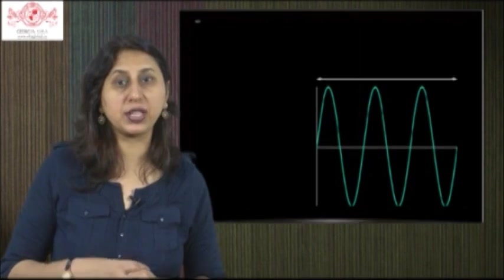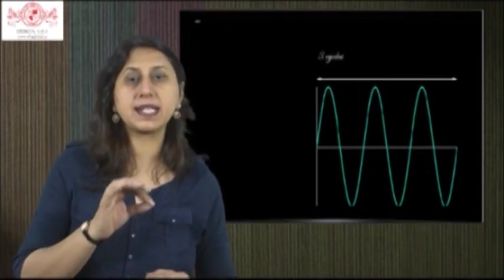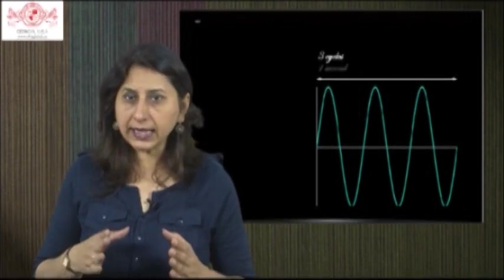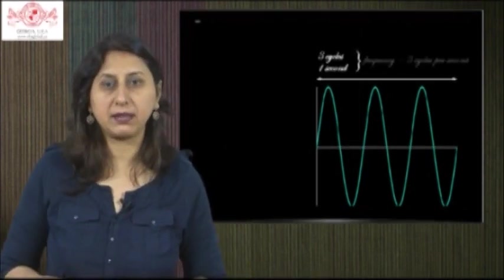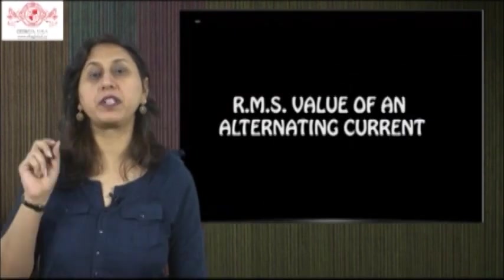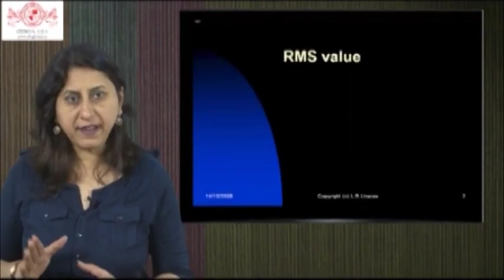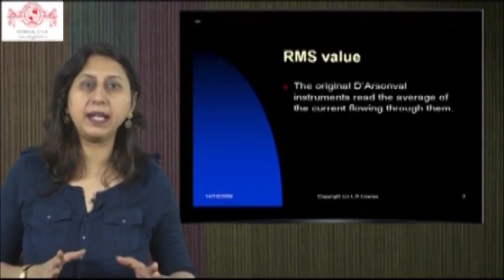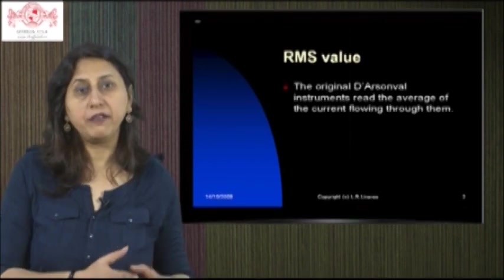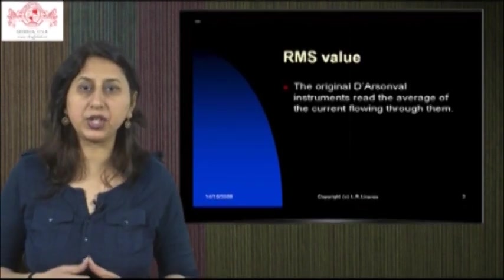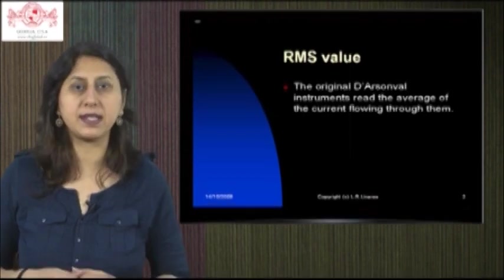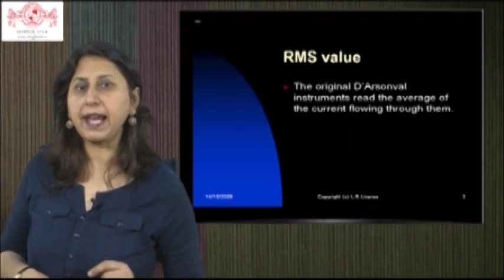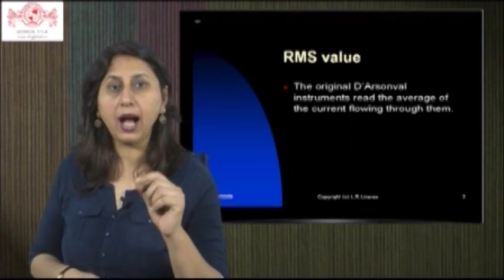RMS value of an alternating current: The RMS value of an AC supply is the steady DC which would convert electrical energy to thermal energy at the same rate in a given resistance. The RMS value is the original D'Arsonval instruments read the average of the current flowing through them.